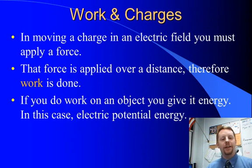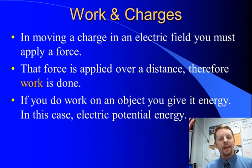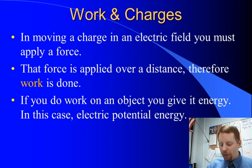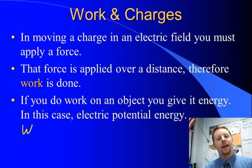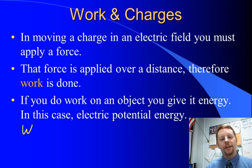When you move a charge in an electric field, you have to do work. You apply a force through some amount of distance or displacement. A force over a displacement is work. And if you do work on something, you give it energy. So in this case, this would be electric potential energy. We use the symbol capital W quite often for electric potential energy, as well as for work. So the work done on an object is the electric potential energy you give it, or if it has electric potential energy and it does work, the amount of work it does gets subtracted from its electric potential energy.